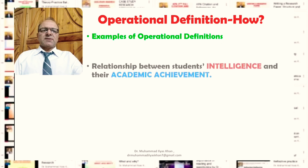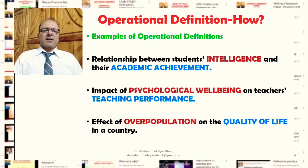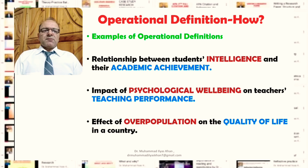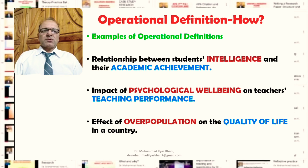Here are some examples that will help you understand how to practically implement the concept of operational definition. For example, if a researcher is interested in exploring the relationship between students' intelligence and academic achievement, we have two main concepts: intelligence and academic achievement. Both have been theoretically defined in several ways. Intelligence has multiple connotations or theoretical meanings.